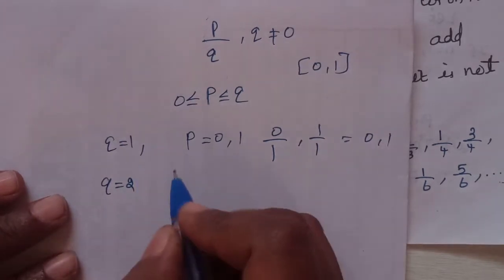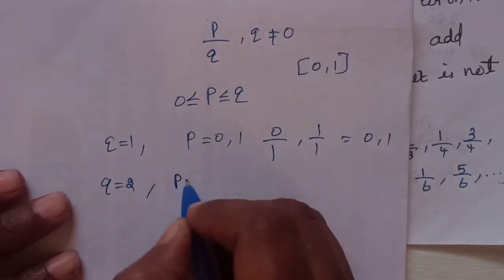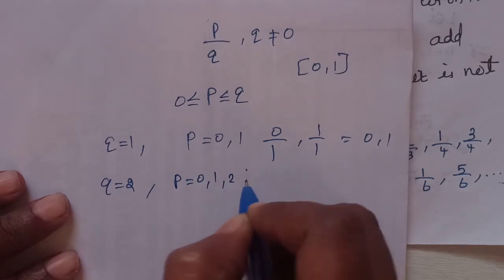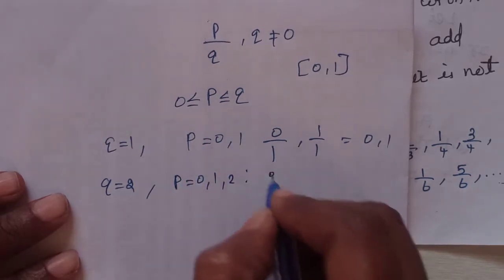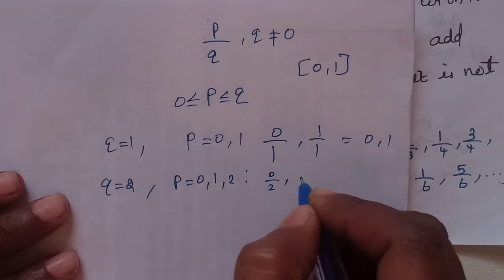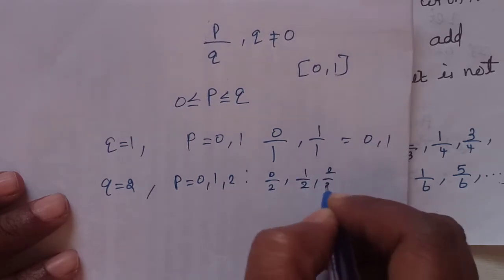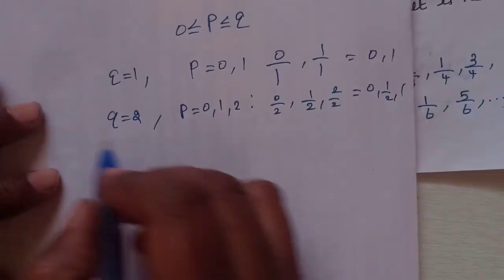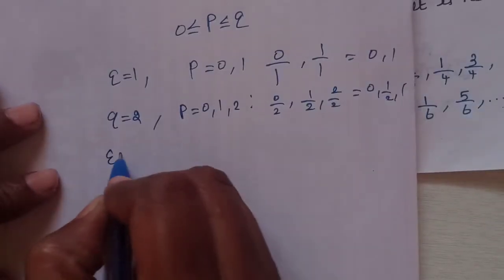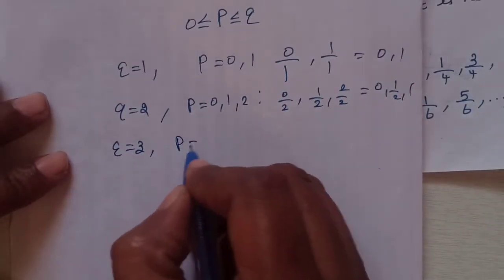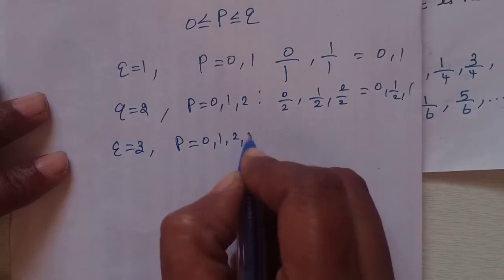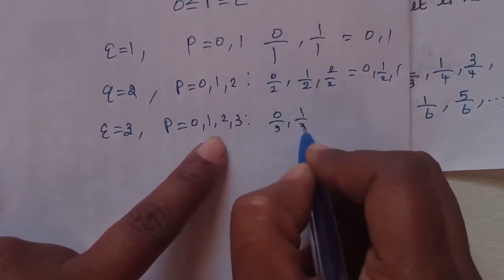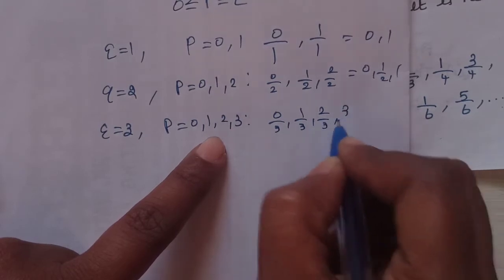For Q equal to 2, the fractions are 0 by 2, 1 by 2, and 2 by 2. For Q equal to 3, the fractions are 0 by 3, 1 by 3, 2 by 3, and 3 by 3. Note that 0 by 3 equals 0 and 3 by 3 equals 1, which are already listed.